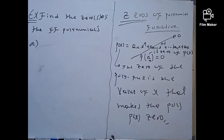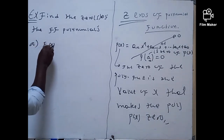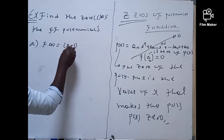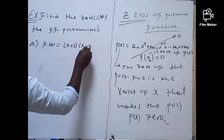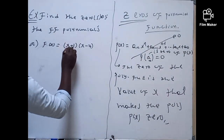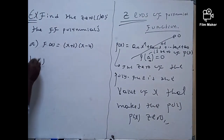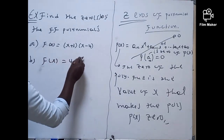Look at this question. You already have f(x) = (x + 1)(x - 4). How are we going to find the zero of this problem? What are the zeros of this one? And the second problem, that's f(x) = 4x + 1.